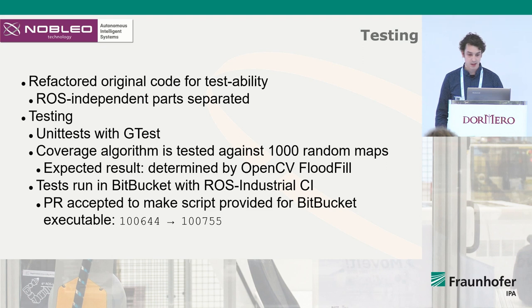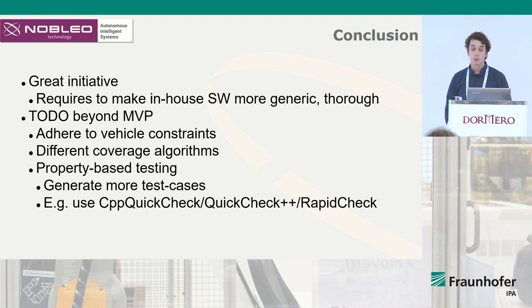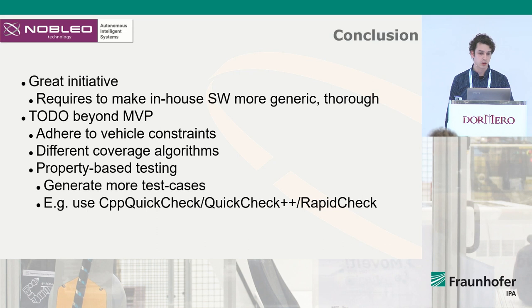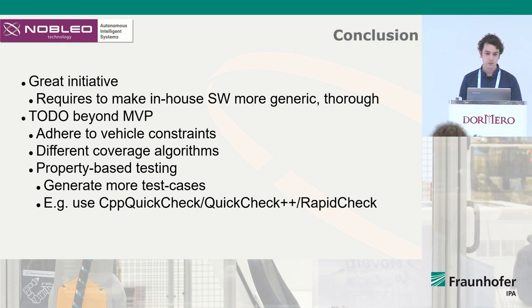As for ROSIN, we think it's a great initiative. It requires us to make our software more generic and develop more thoroughly, including documentation and testing. But we also have a lot still to do. For example, the wall-cleaning robot — due to the placement of the magnets, the robot cannot drive downward, and we would like to include that constraint into the global planning. There's also a possibility to add different coverage algorithms that use strokes rather than spirals, and to generate more tests.